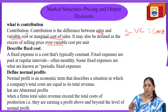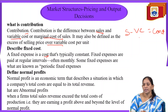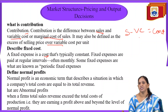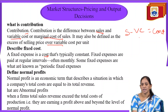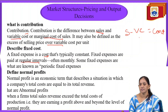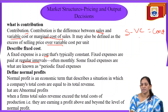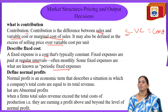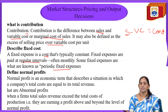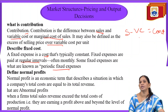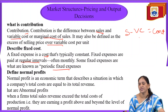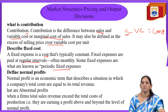Describe fixed cost. A fixed cost is a cost that remains typically constant — fixed expenses are paid at regular intervals, often monthly. Every month or every year a fixed amount is paid, with no change in the cost. This is called fixed cost. It can also be termed a periodic cost.